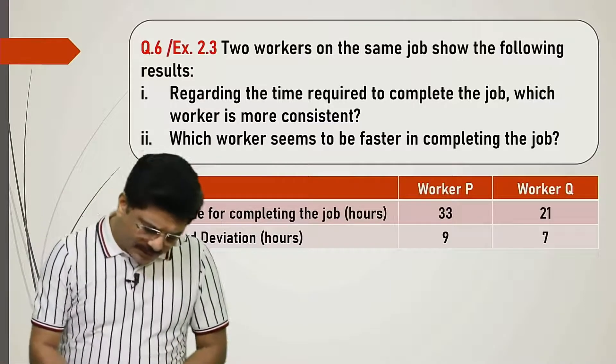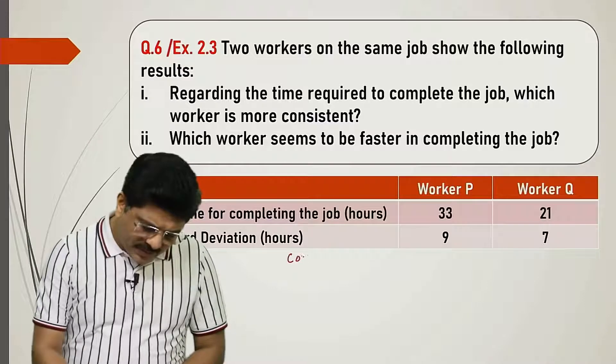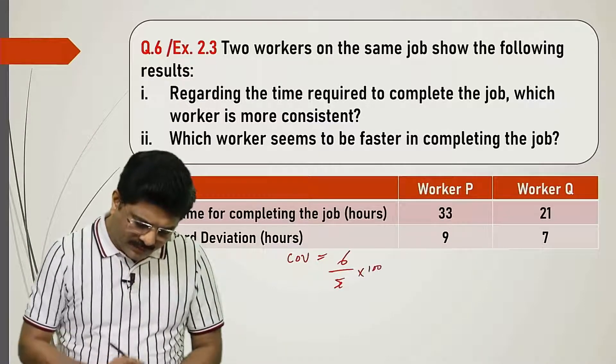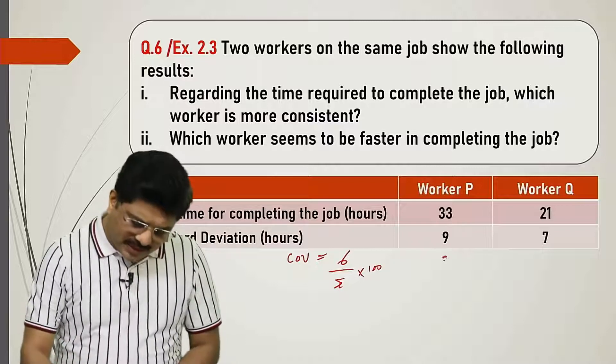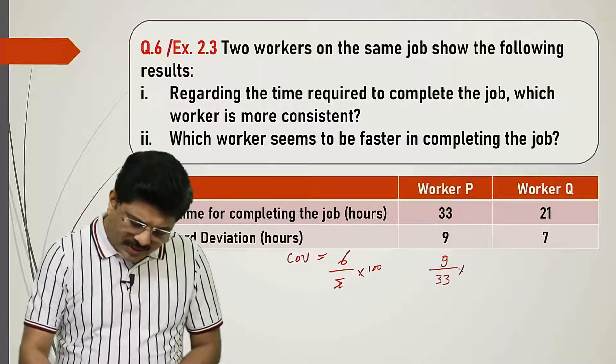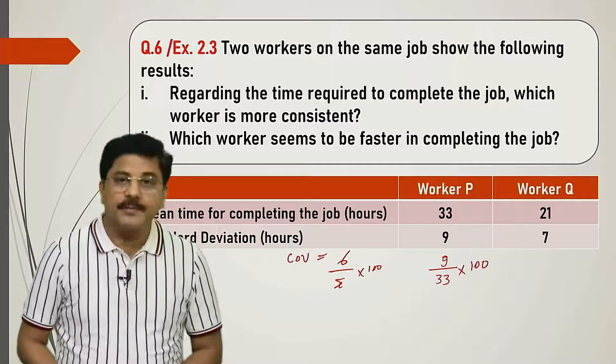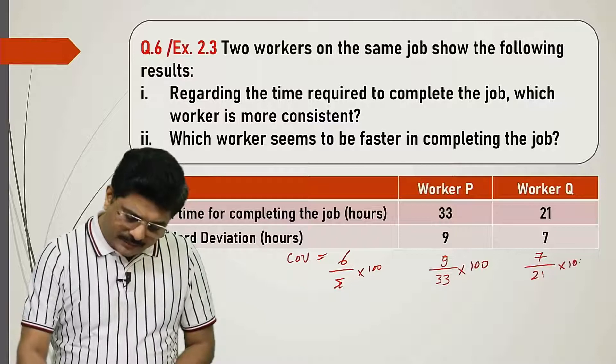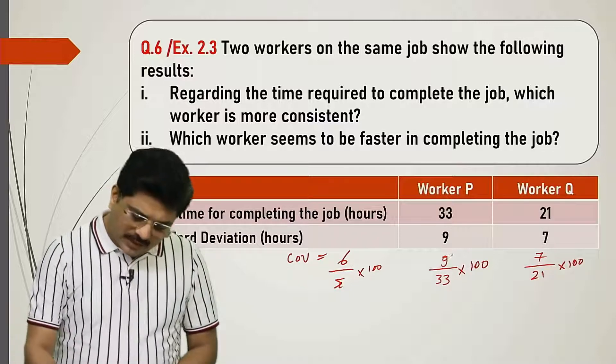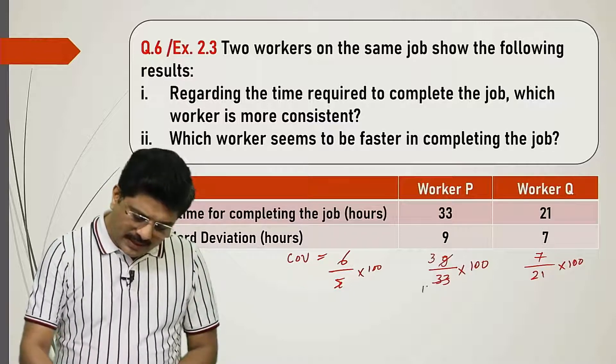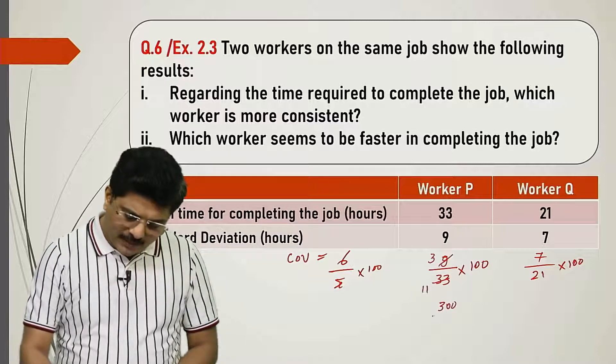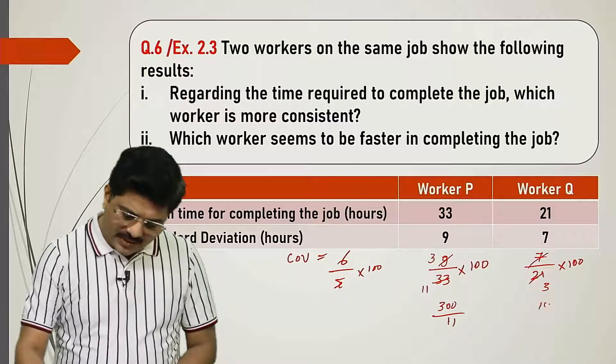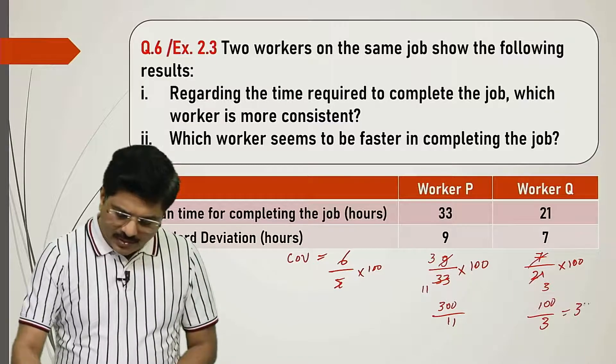We need to find coefficient of variation. That's the application being asked. If coefficient of variation is smaller, then consistency is more. The smaller the CV, the more the consistency. This is the interpretation. So first we find CV, then we discuss further. Formula: CV is standard deviation upon x bar into 100.